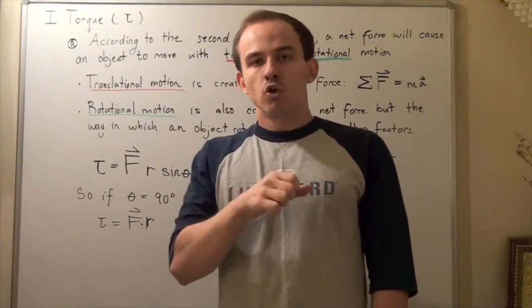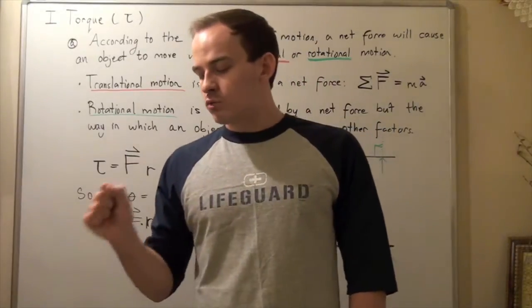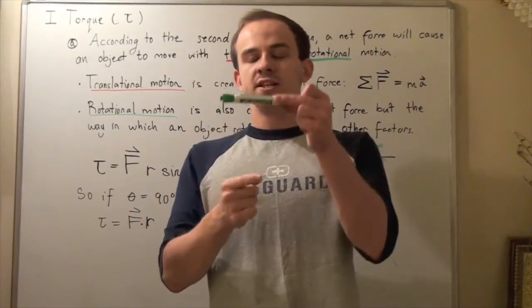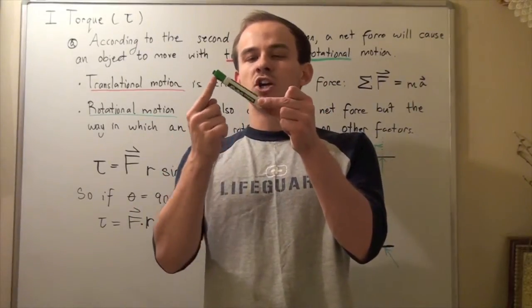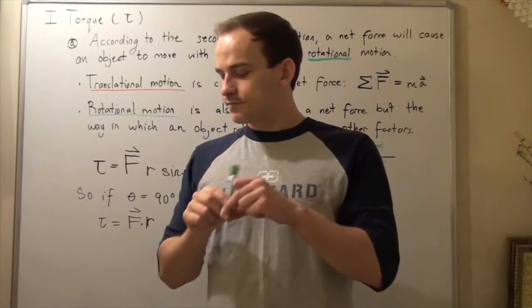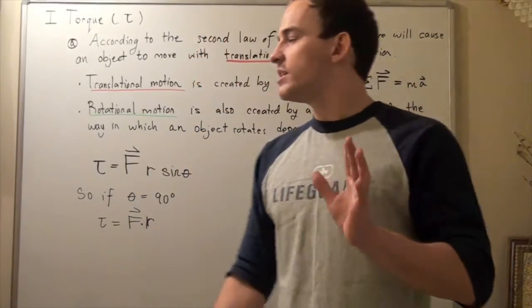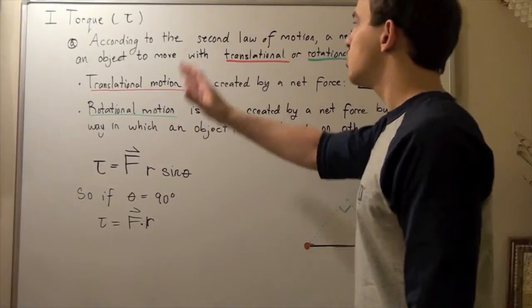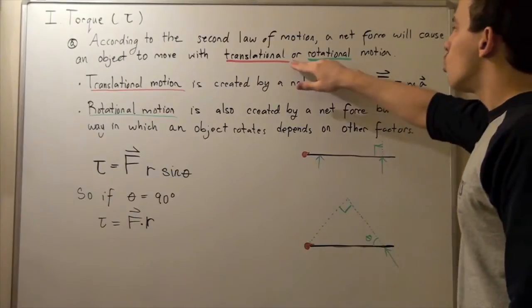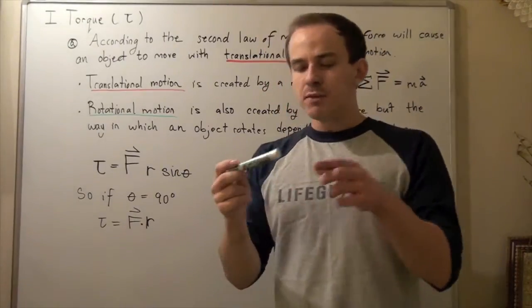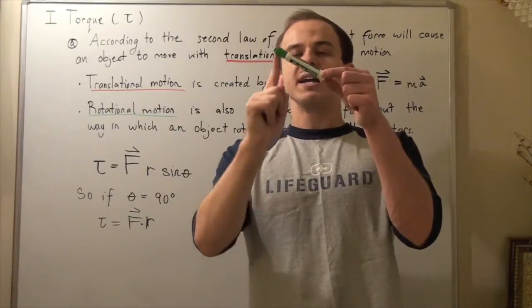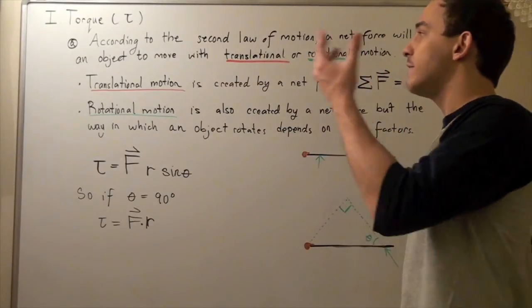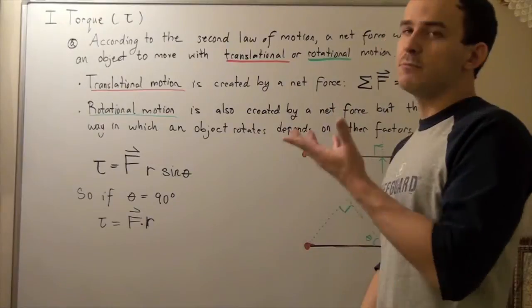A door, for example, rotates because as you push the door, that door will rotate. If you take this marker and fix it along some point here, and I apply force this way, my marker will begin rotating because I'm applying a force. According to the second law of motion, a net force will cause an object to move with translational motion as well as rotational motion. Rotational motion means that if I apply force, my object will begin to rotate, will begin to move via rotation. So if I apply force on my object, my object can in fact begin to rotate.